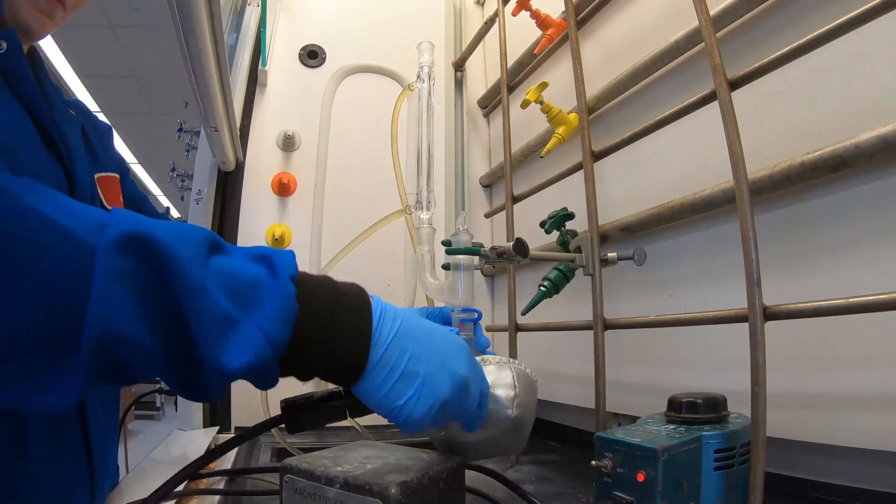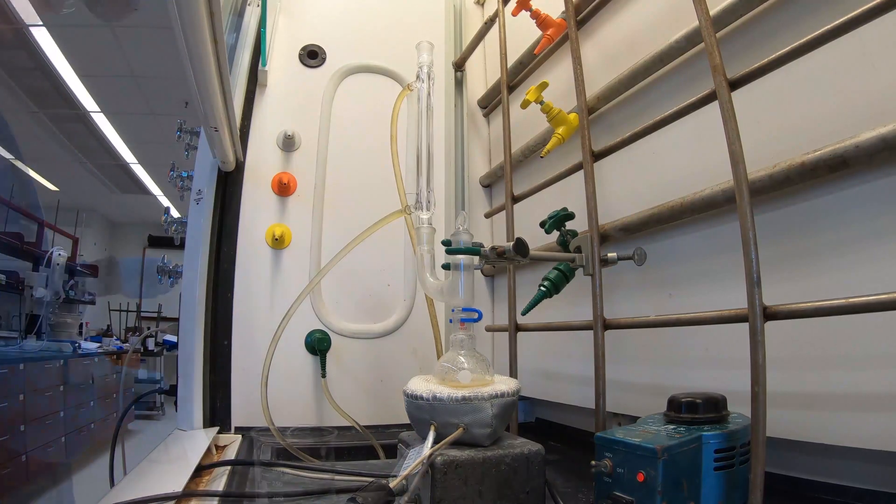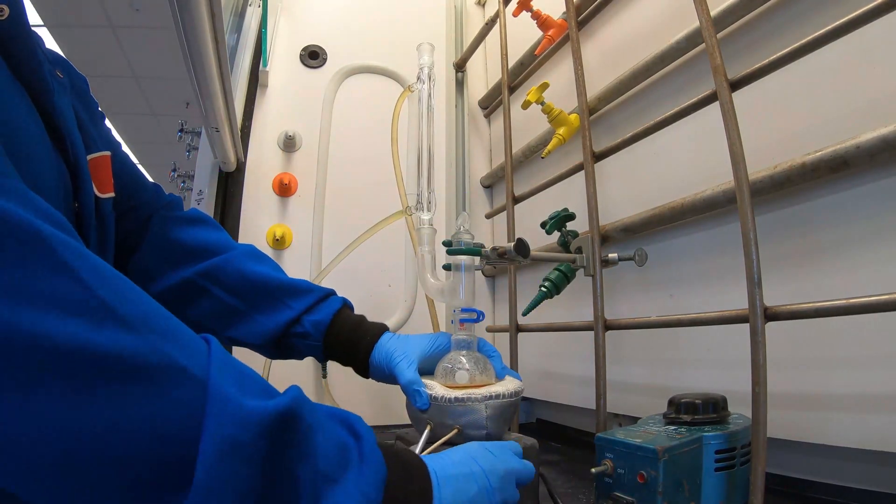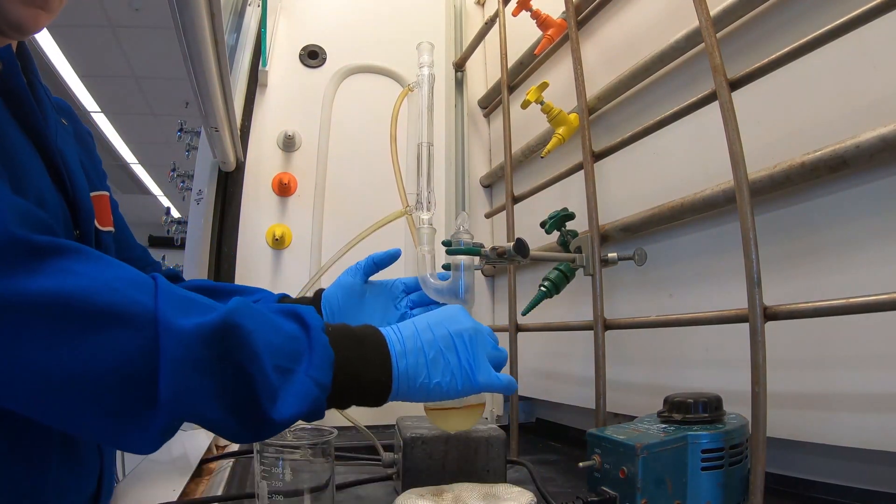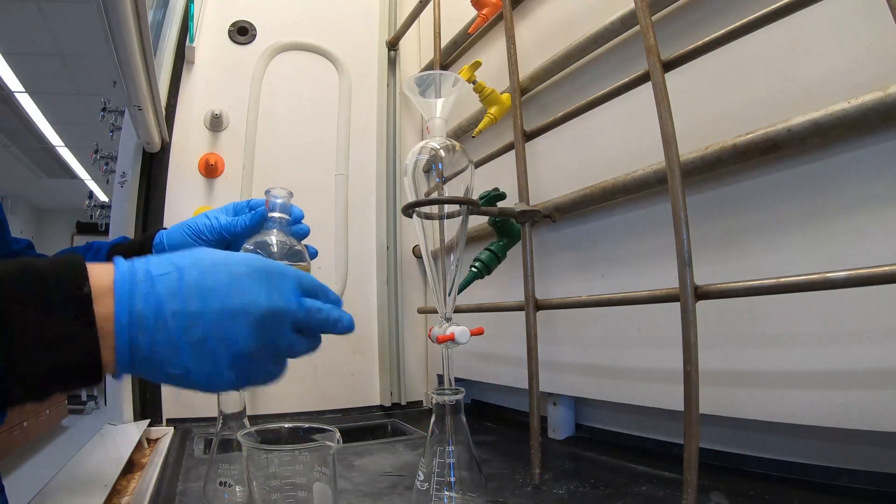Then you're going to heat your reaction for 15 minutes. Remove your round bottom flask from the heating mantle and allow to cool to room temperature. Then transfer the solution to your separatory funnel.